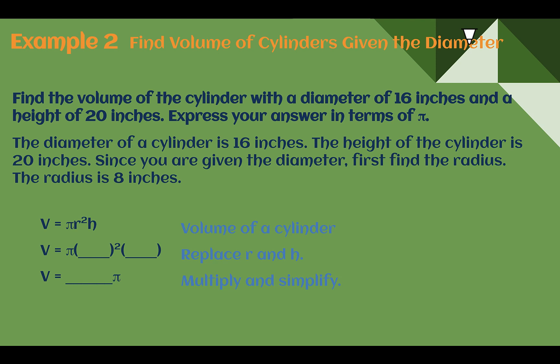Example 2. Find the volume of cylinders given the diameter. Find the volume of the cylinder with a diameter of 16 inches and a height of 20 inches. Express your answer in terms of π. The diameter of the cylinder is 16 inches. The height is 20. But if we look at our volume formula, we don't want the diameter. We want the radius. So since we're given the diameter, which in a circle, diameter is all the way across. We need to find the radius, which is just halfway across. So the radius is half of the diameter. It's going to be 8 inches instead of 16.